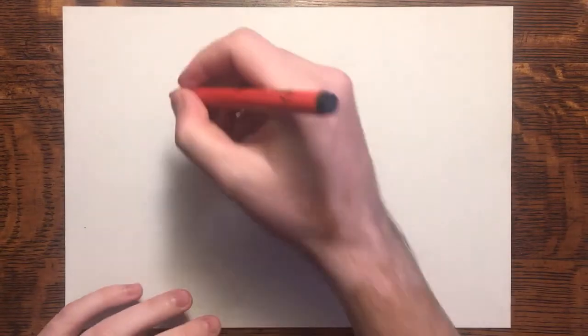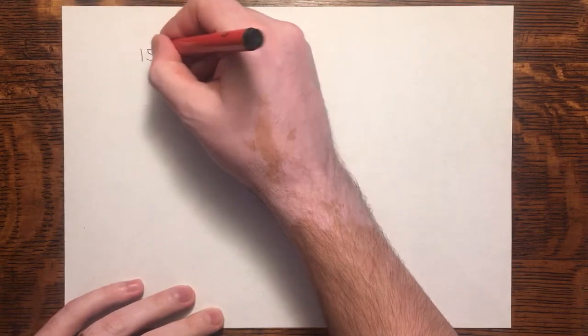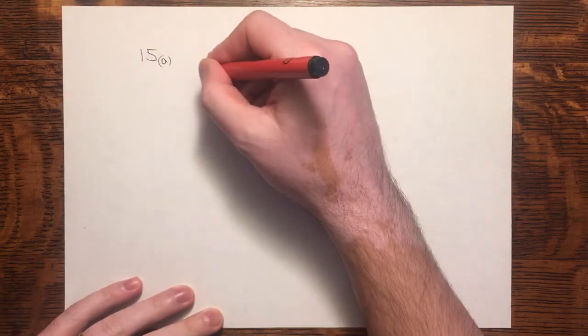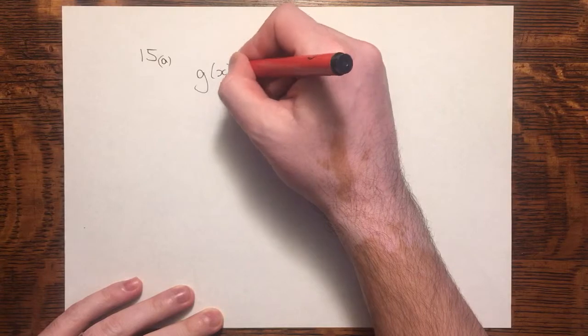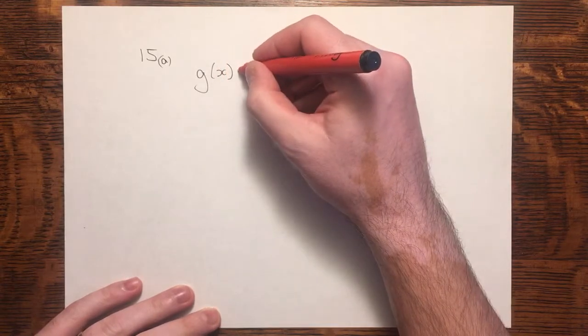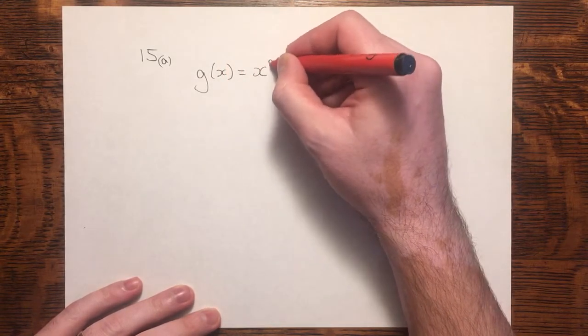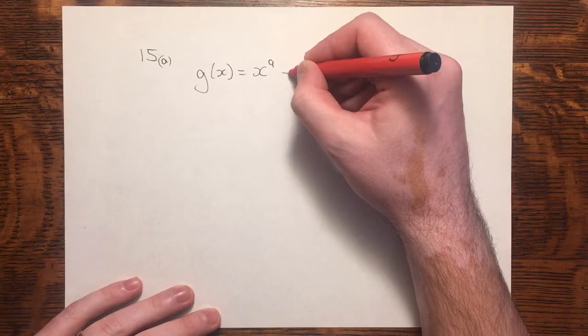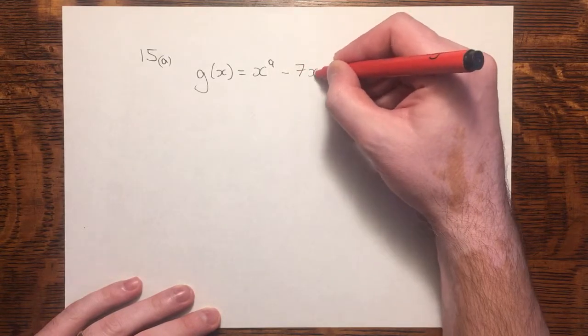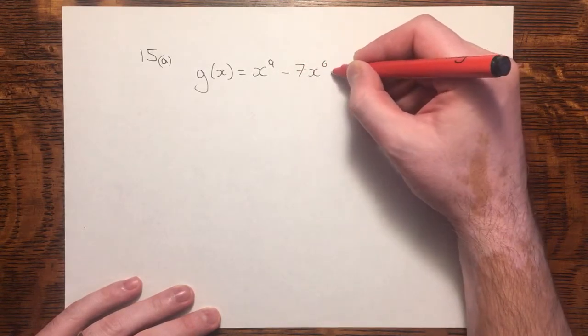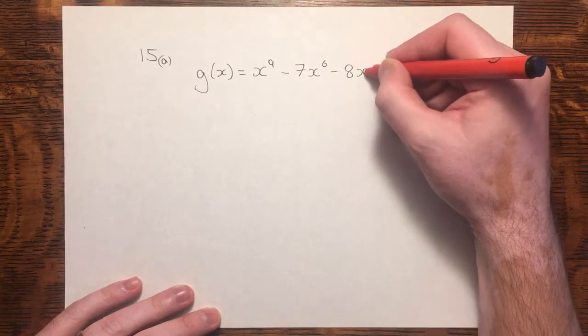In question 15, we're given the function g of x, which is equal to x to the power 9 minus 7x to the power 6 minus 8x cubed.